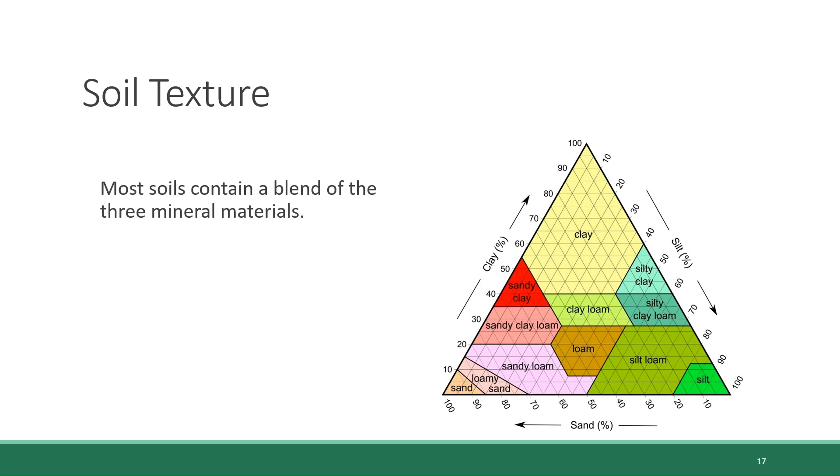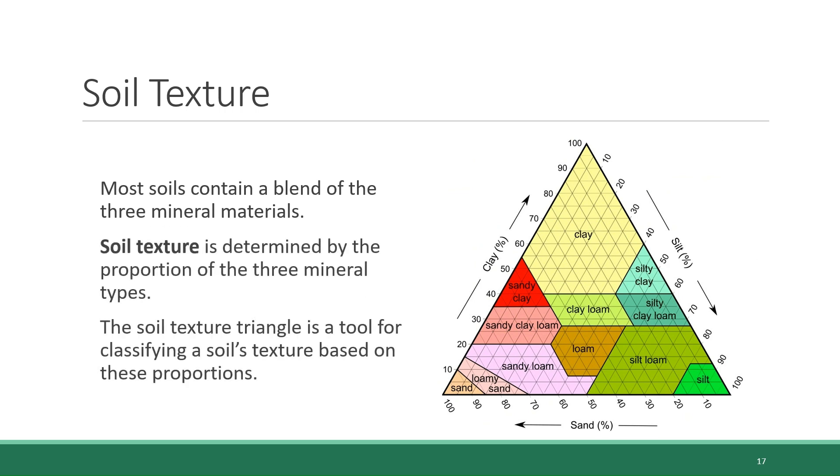In reality, almost no soil is pure clay, silt, or sand. It's a blend of these three in varying proportions. So this means there aren't just three types of minerals. But rather, there are many types of soil textures that represent different proportions of the three mineral forms. And there's this graphical tool called the soil texture triangle that is used to classify a soil based on those proportions.